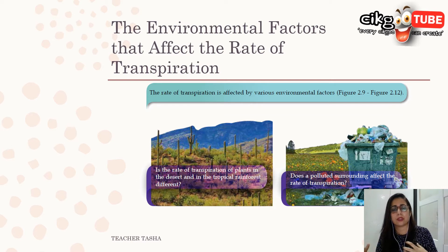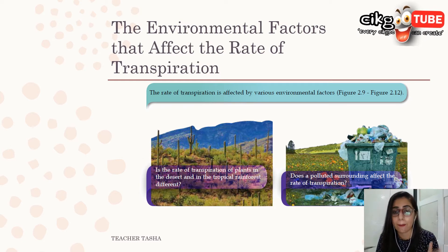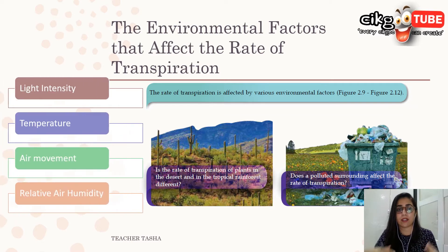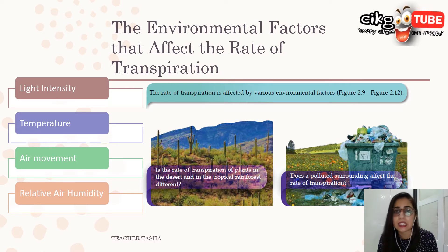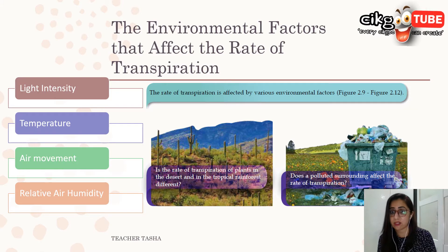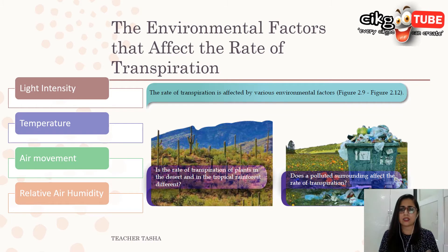There are factors that affect the rate of transpiration. The four main ones are light intensity, temperature, air movement, and relative air humidity. There are also other factors: number of leaves, surface area of leaves, level of air pollution, position of the leaves, and the location of the plant — whether it is in a cold or hot region.